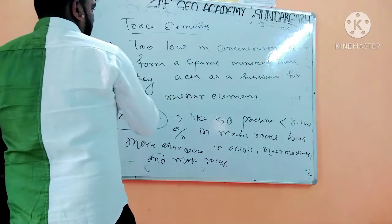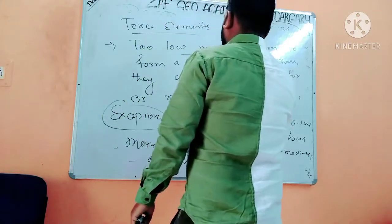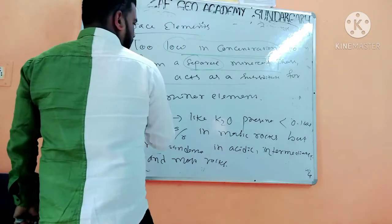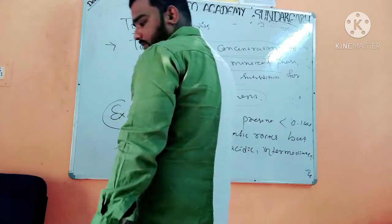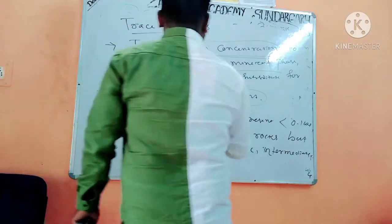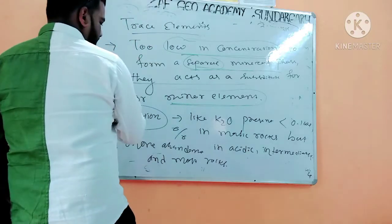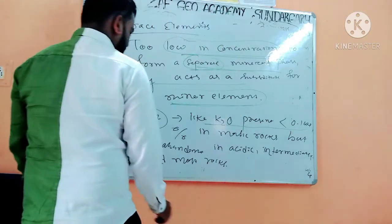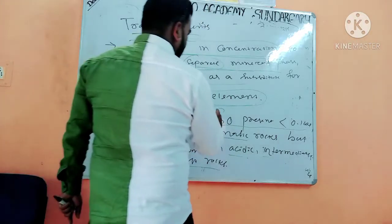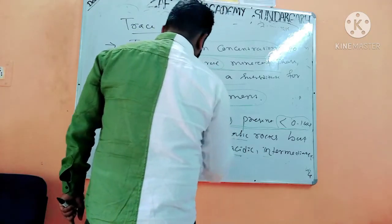Trace elements are present in very low concentration — too low to form a separate mineral phase. They act as substitutes for major or minor elements. However, there is an exception: K2O is present at 0.1 weight percent in mafic rocks but is more abundant in acidic and intermediate rocks, making it an exception to the trace element classification.